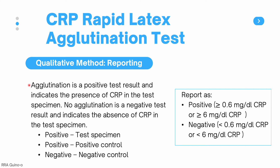For the qualitative method: agglutination is a positive result indicating CRP presence, and no agglutination is a negative result indicating CRP absence. A valid positive result requires the test specimen to be positive, the positive control to be positive, and the negative control to be negative. If the positive control is negative or the negative control is positive, invalidate the test and check your reagents. Report positive reactions as positive or greater than or equal to 6 mg per liter CRP, and negative results as less than 0.6 mg per deciliter CRP. This value may change depending on the sensitivity of the test kit.